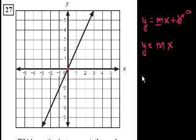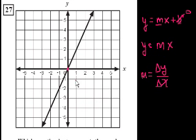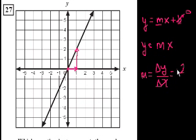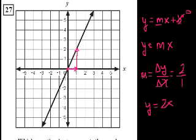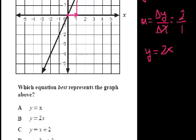Let's figure out the slope. Slope is equal to change in y over change in x. When we increase x by 1, y increases by 2. So y changes by plus 2 when x changes by plus 1. The slope is equal to 2. So the equation of this line is y equals 2x, which is choice B.